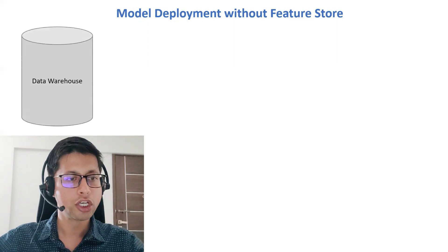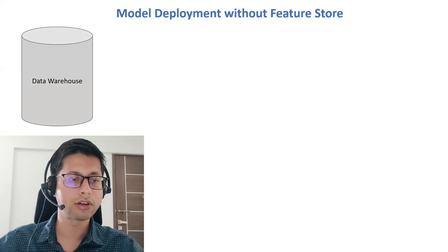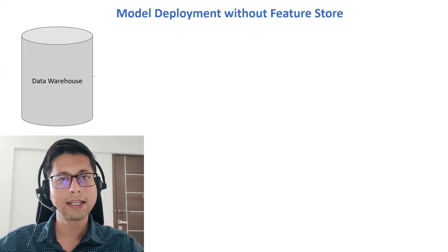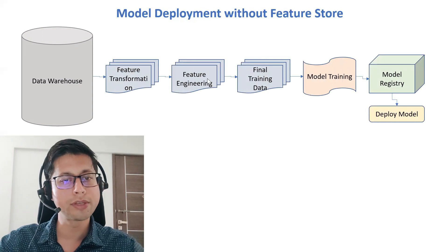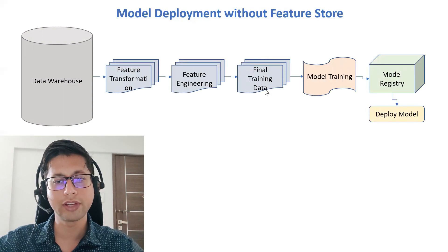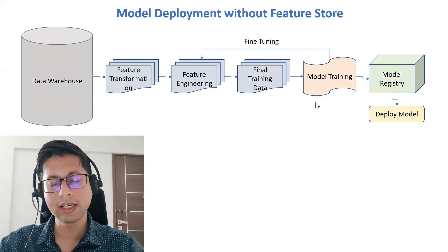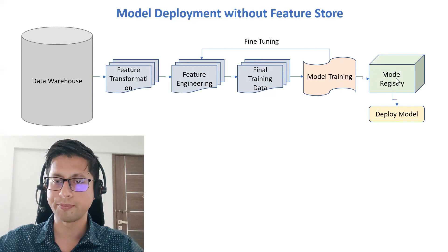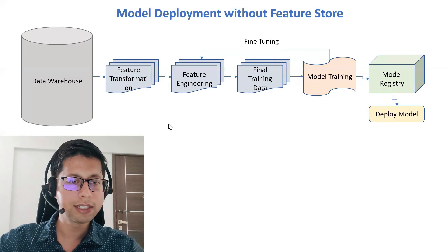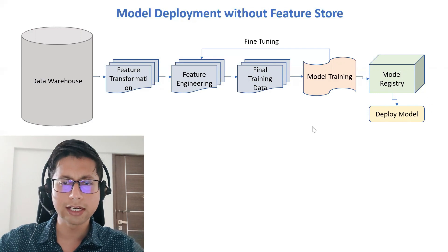As you can see on my screen, we have a data warehouse. For any machine learning model training we need data, so we start with the data warehouse where our complete data is stored. The machine learning journey goes: feature transformation, feature engineering, final training data, then we train the model, do fine tuning, and once satisfied with performance we store it in a model registry and then deploy.